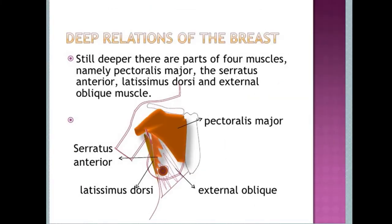The deep relation of the breast is that it lies on the superficial fascia. Deep to the breast is the deep fascia containing the pectoralis major muscle. Four muscles form the deep relations of the breast: pectoralis major — which contains most of the content of the breast bed — serratus anterior, external oblique, and a portion of the latissimus dorsi may also be present deep to the breast tissue.